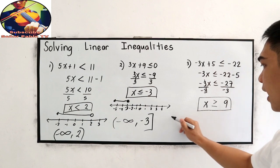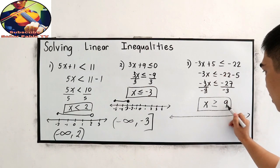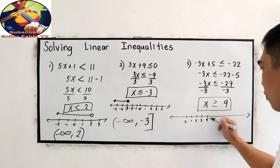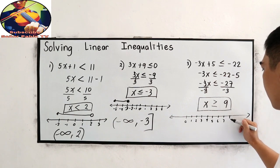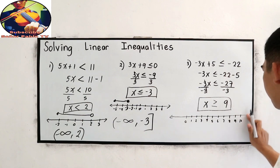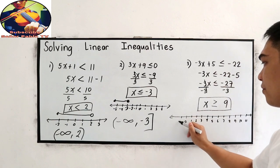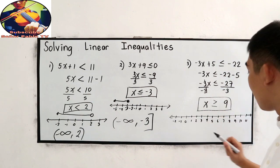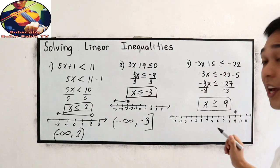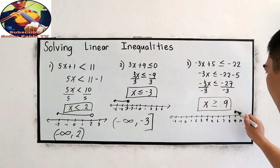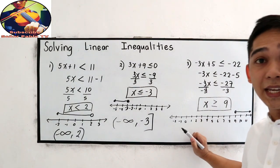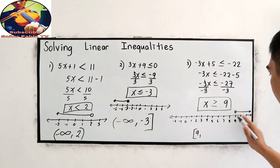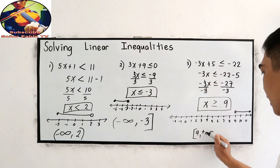Now let us plot on our number line. Starting from 0: 1, 2, 3, 4, 5, 6, 7, 8, 9, 10, 11, and negative 1, negative 2. Since x is greater than or equal to 9, the value 9 is included, and we shade to the right toward positive infinity. For our interval notation, we close to positive 9 using a bracket, then going to positive infinity.